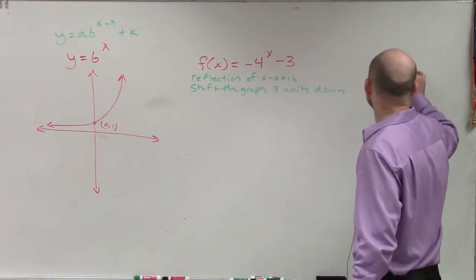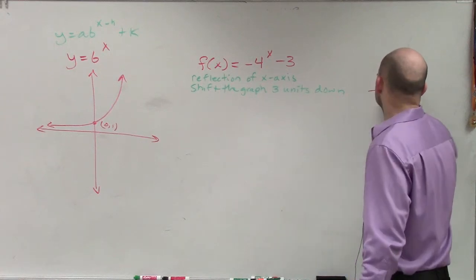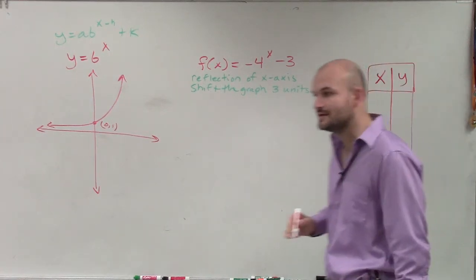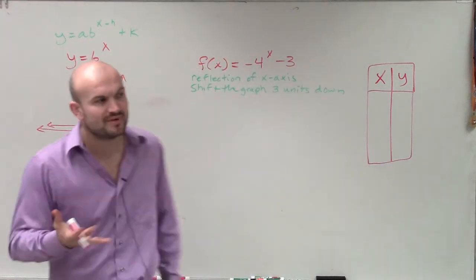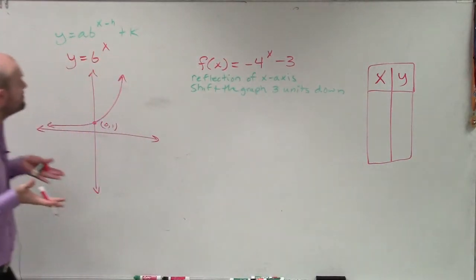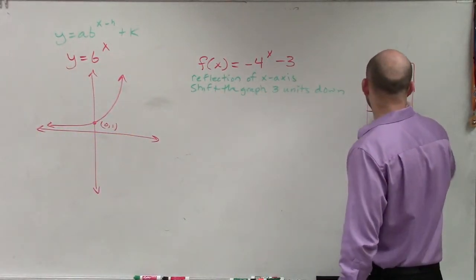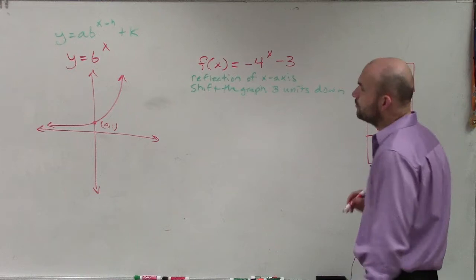When we're doing a table of values, just pick two points. You don't need anything crazy for your amount of table of values. Just pick two points that I'm going to use. And the best two points I told you guys to use is to always go back and use 0 and 1.